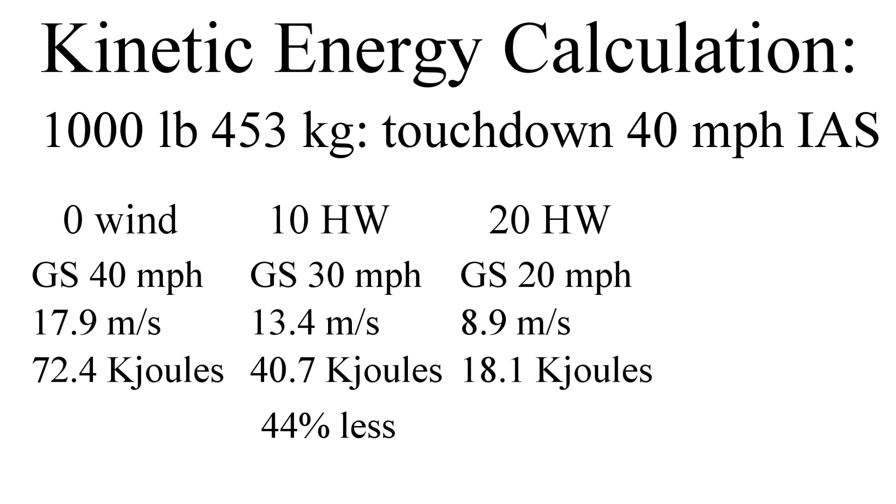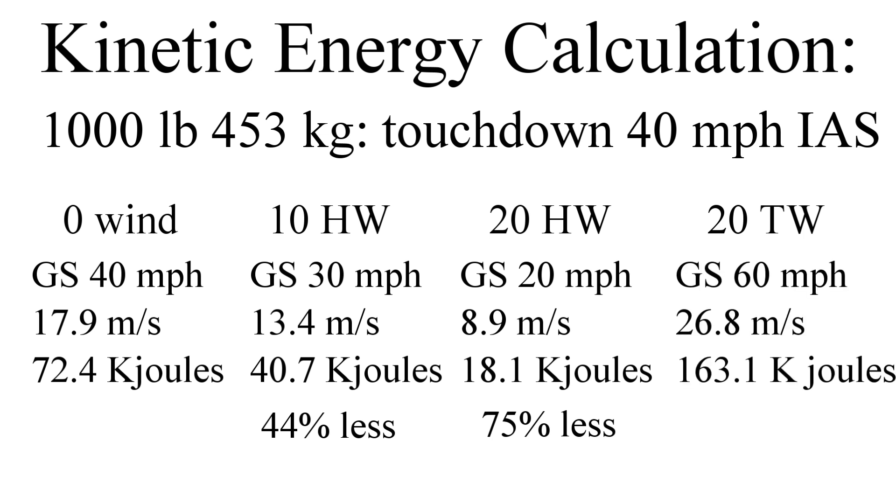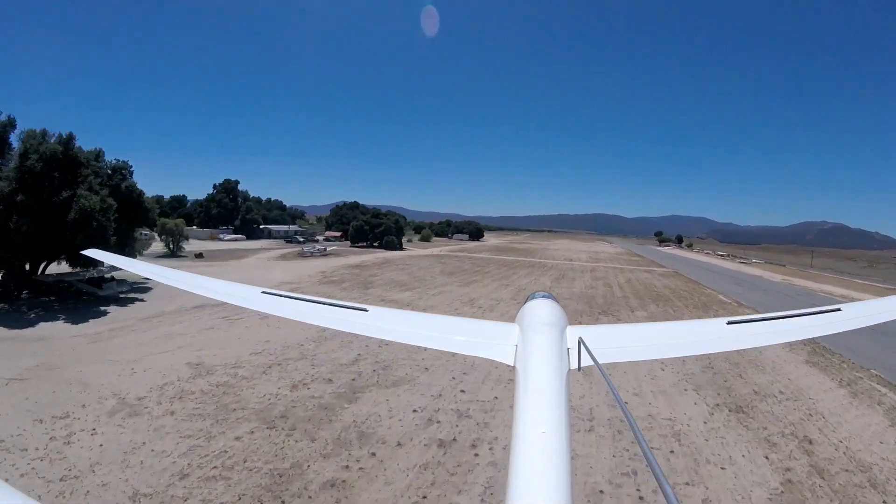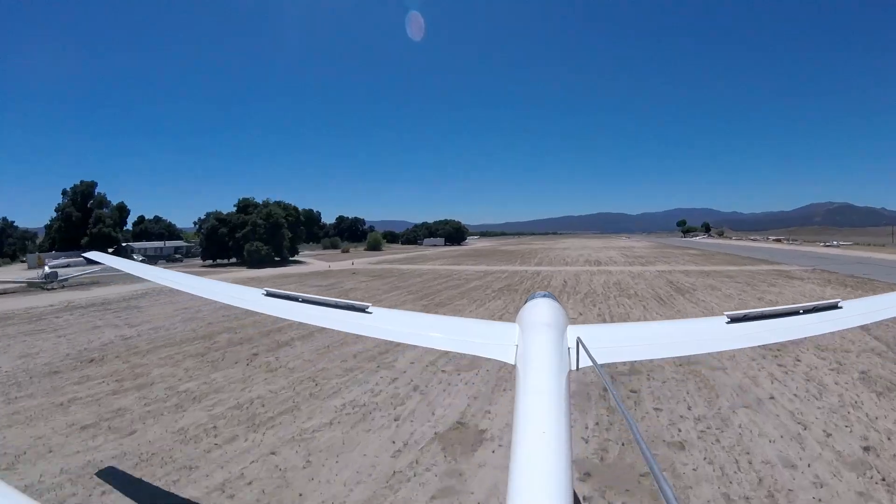But if we want to do a return to the field and land downwind with that 20-mile wind, now we'll have a ground speed of 40 plus 20, or 60 miles an hour. 50% faster than the calm wind scenario for 2.25 times the energy, and 3 times faster than landing into a 20-mile wind for 9 times the energy. These higher energies are what you need to get rid of to stop the glider. This is why it quickly becomes a risky move to land downwind with a high tailwind.